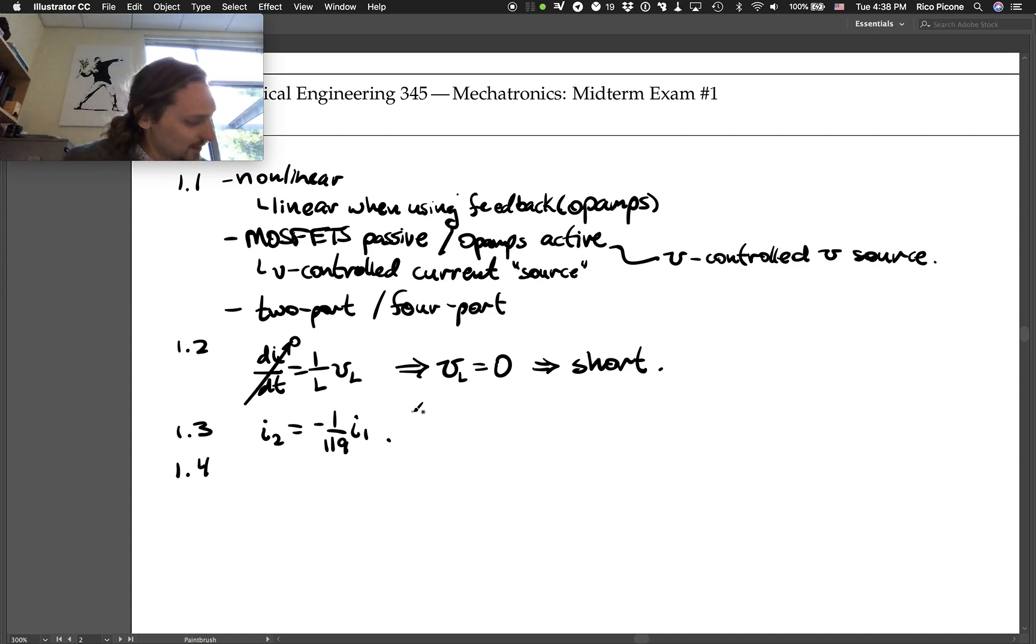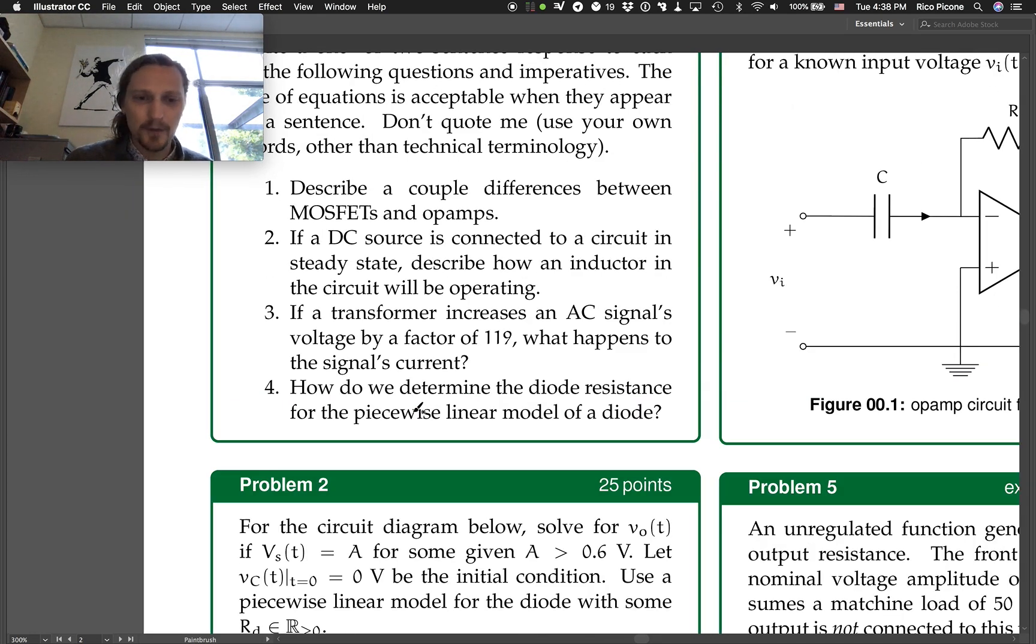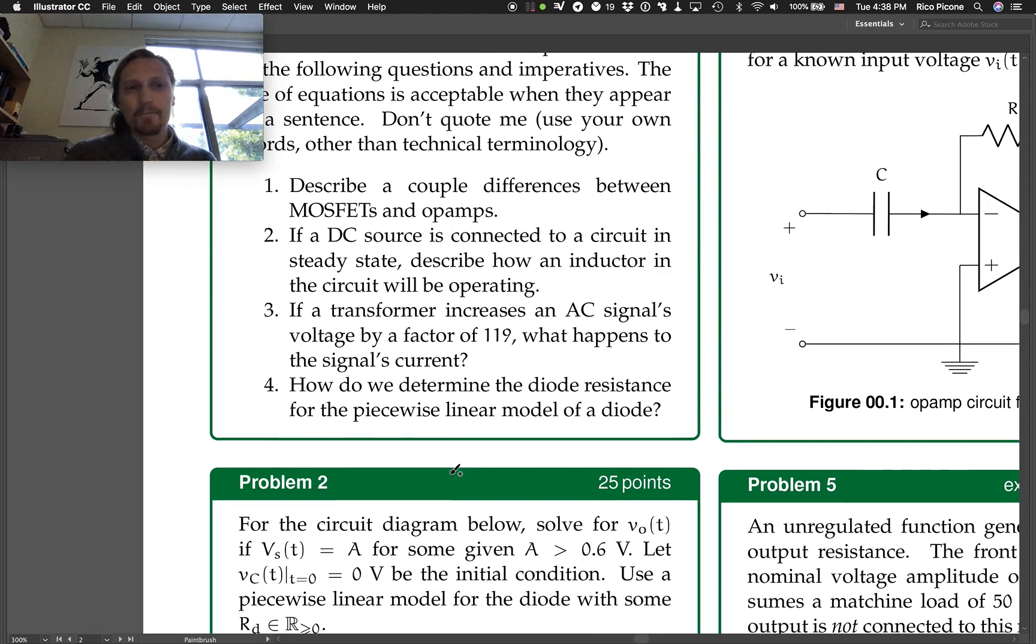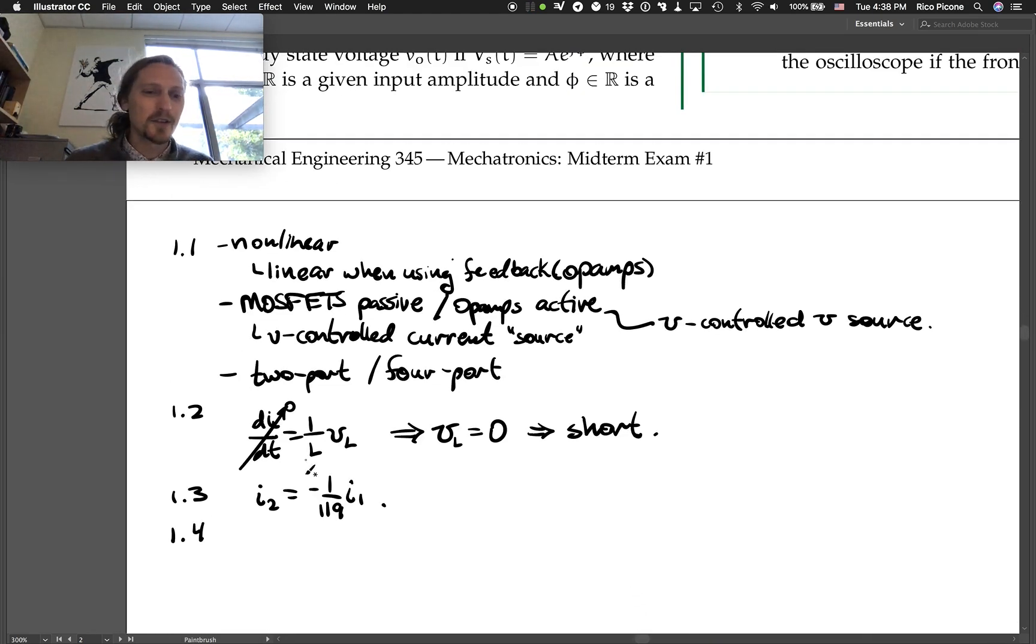Okay, so then what's the next one? For how do we determine the diode resistance for the piecewise linear model of a diode? I accepted all kinds of answers for this essentially. The idea is I just wanted to have you guys give some sort of justification for how you choose R_d. Usually it's some sort of iterative method or you could use even a single attempt method to estimate what the current is that's going to go through the diode. Usually we start out with R_d equals zero and then we use that, do the whole circuit analysis, find out how much current was flowing through the diode.